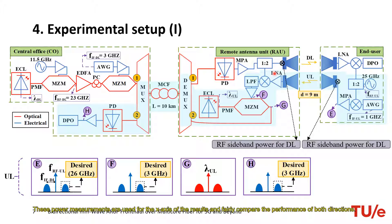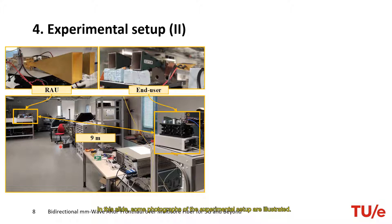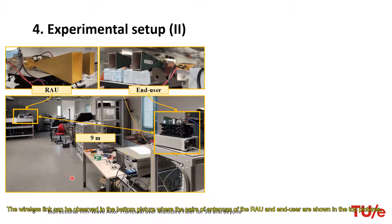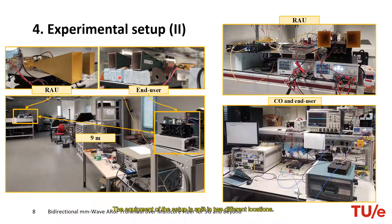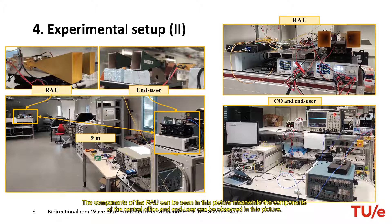In this slide, some photographs of the experimental setup are illustrated. The wireless link can be observed in the bottom picture where the pairs of antennas of the RAU and end user are shown in the top pictures. The equipment of the setup is split in two different locations. The components of the RAU can be seen in this picture, while the components of the central office and end user can be observed in this picture.